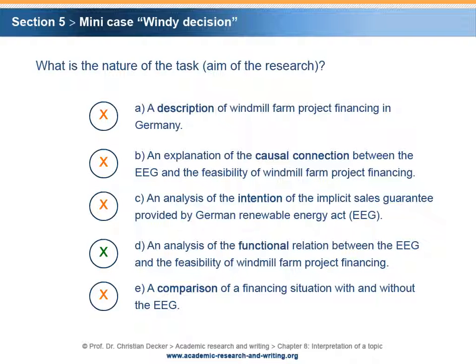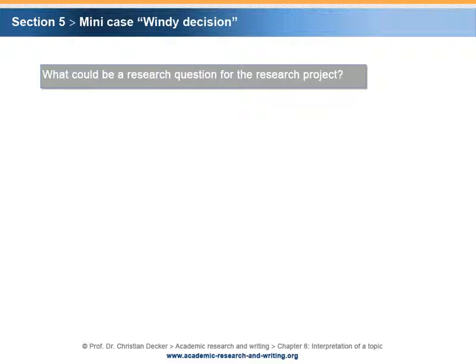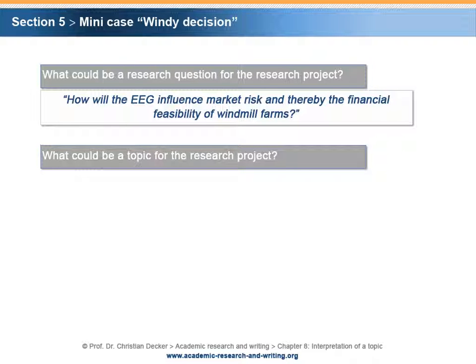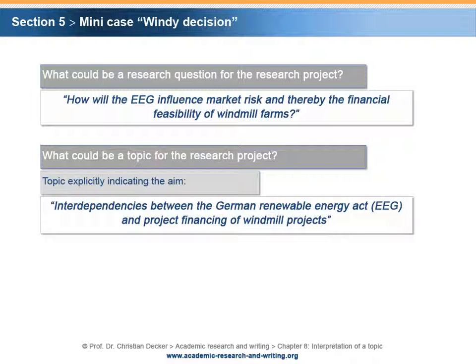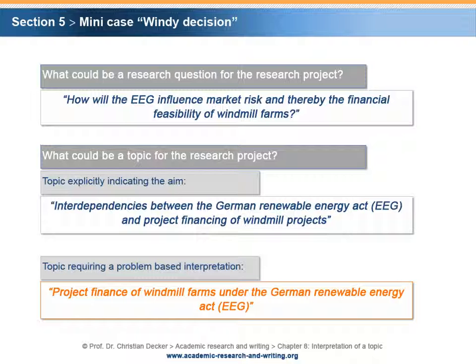The correct answer is D. The nature of the task is to analyze the functional relation between the EEG and the feasibility of windmill farm project financing. In this problem setting, also options A, B, C and E leave room for alternative or additional aims. The question to be asked could be: How will the EEG influence market risk and thereby the financial feasibility of windmill farms? An option explicitly indicating the aim is: Interdependencies between the German Renewable Energy Act and project financing of windmill projects. An option requiring an interpretation is: Project finance of windmill farms under the German Renewable Energy Act (EEG).